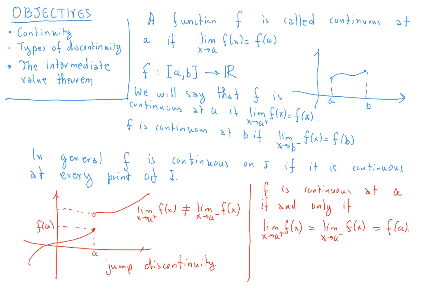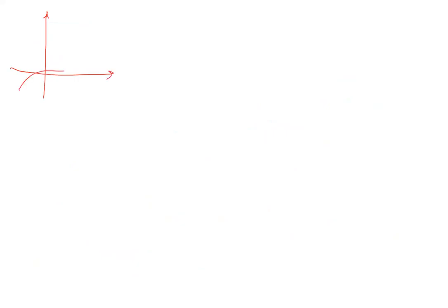Let's give one more type of discontinuity. Imagine this situation: the function could have been continuous, but somebody went and spoiled it at one point. So here's a and here's f of a, and clearly the limit as x approaches a of f of x is different from f of a. We could actually make the function continuous if we redefined it at a to be equal to its limit. This type of discontinuity is called a removable discontinuity, because by changing the function at just one point, we can remove the discontinuity.